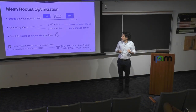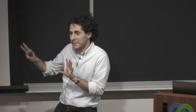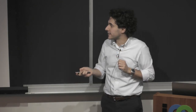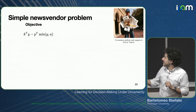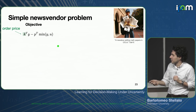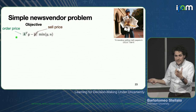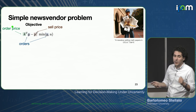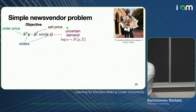Now jumping to the second part of the talk — which is still unpublished work but particularly exciting, especially in the context of this workshop — I would like to discuss embedding differentiable optimization to solve robust optimization problems. I'll start from a news vendor problem: you want to minimize an objective defined by ordering costs minus selling price to maximize profits, deciding how many orders to make given an uncertain demand, which we model as a log-normal distribution in two dimensions.